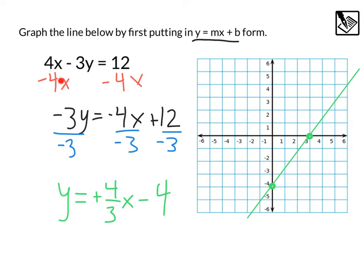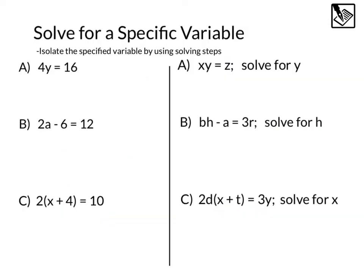Speaking about solving equations with more than one variable, next up is solving for a specific variable. These are often called literal equations, and they involve more than one variable. To solve these, we're going to isolate the specified variable by using solving steps just like we would in equations without multiple variables.